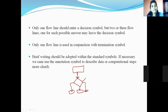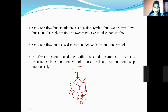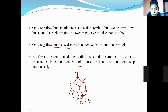The next guideline is: only one flow line is used in conjunction with the termination symbol. The termination symbol is the oval at the end where the program stops. When two flow lines come together — that is a conjunction, meaning they are added together — they combine into only one flow line, and that one flow line goes to the termination symbol.